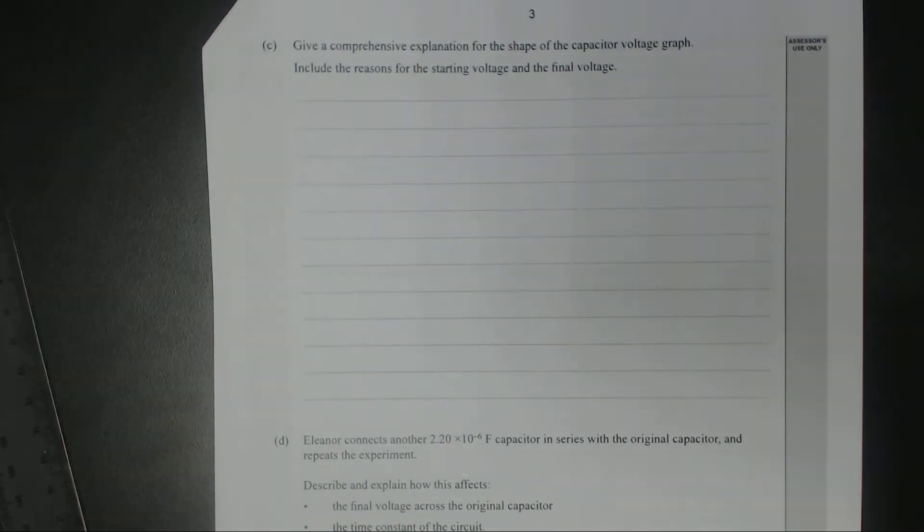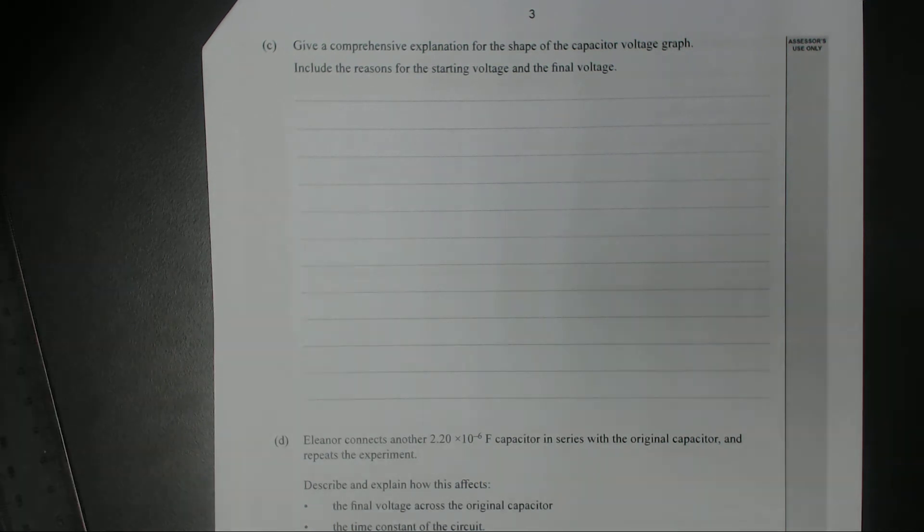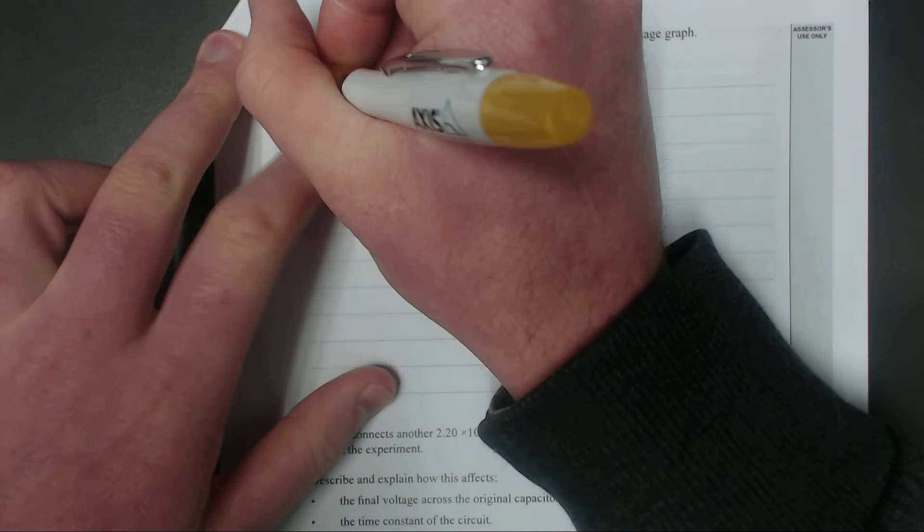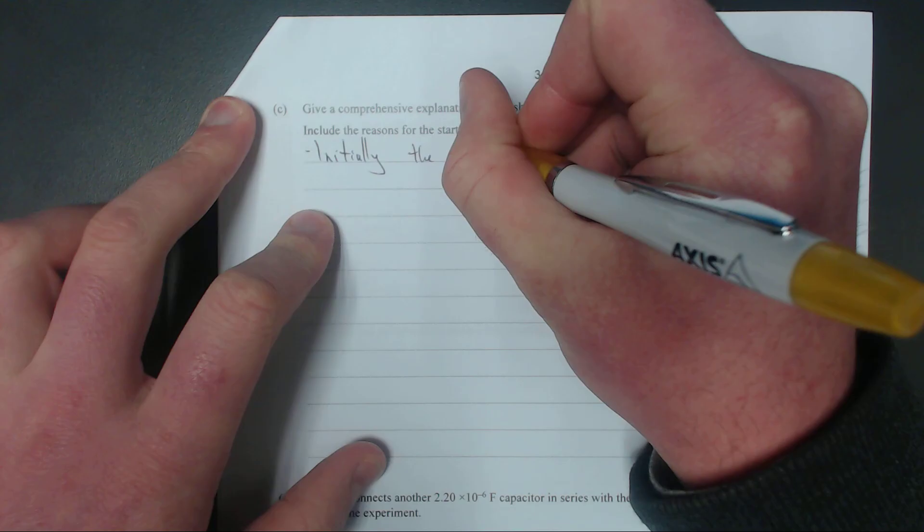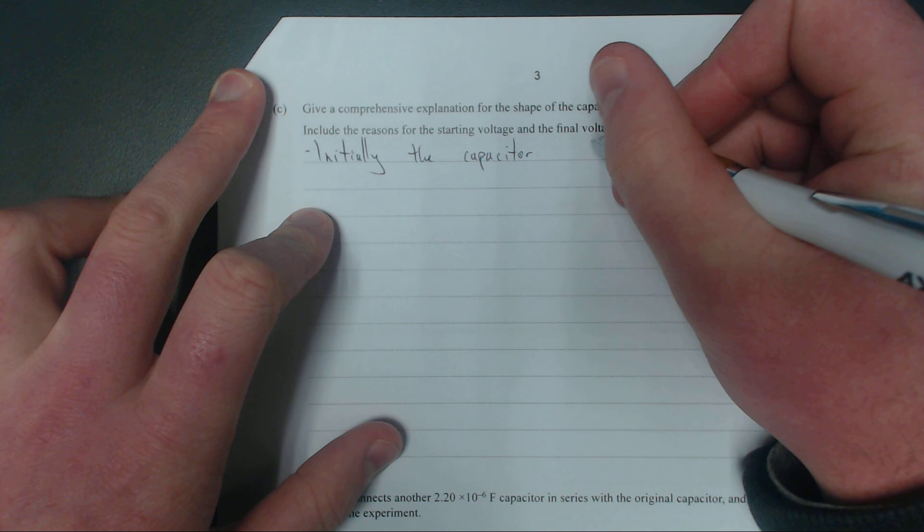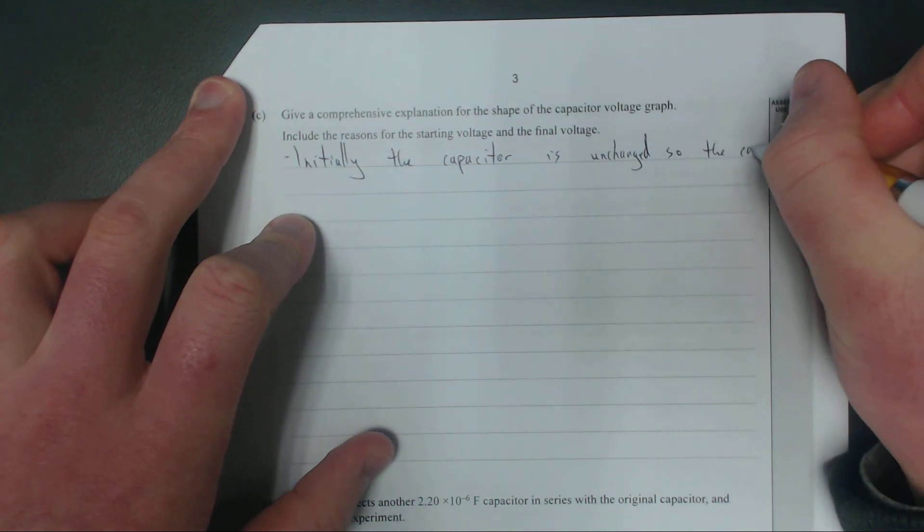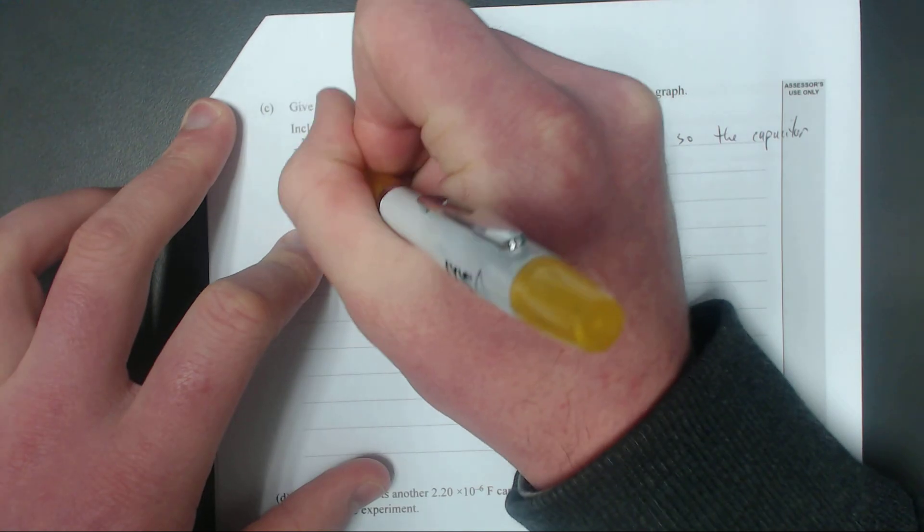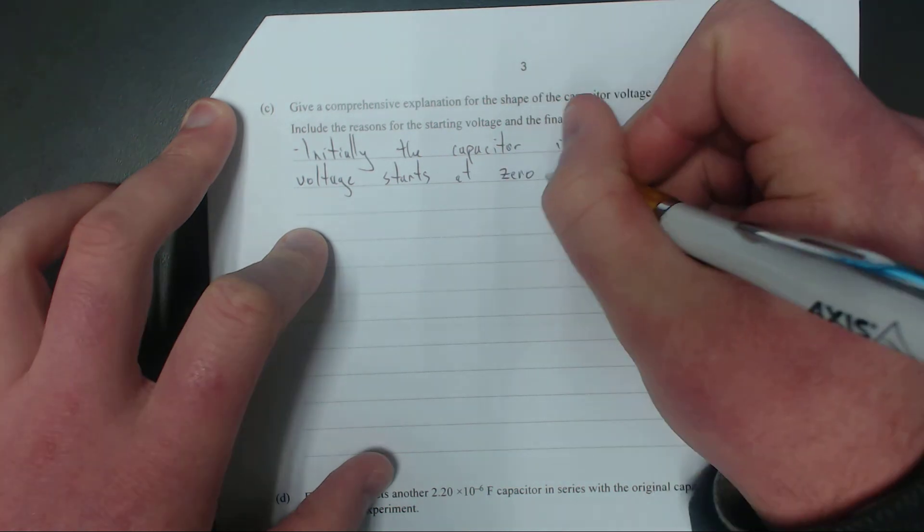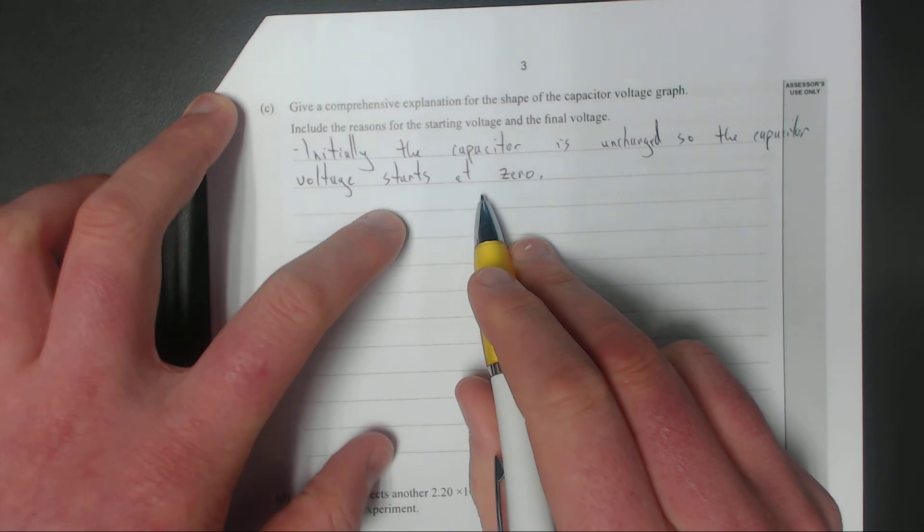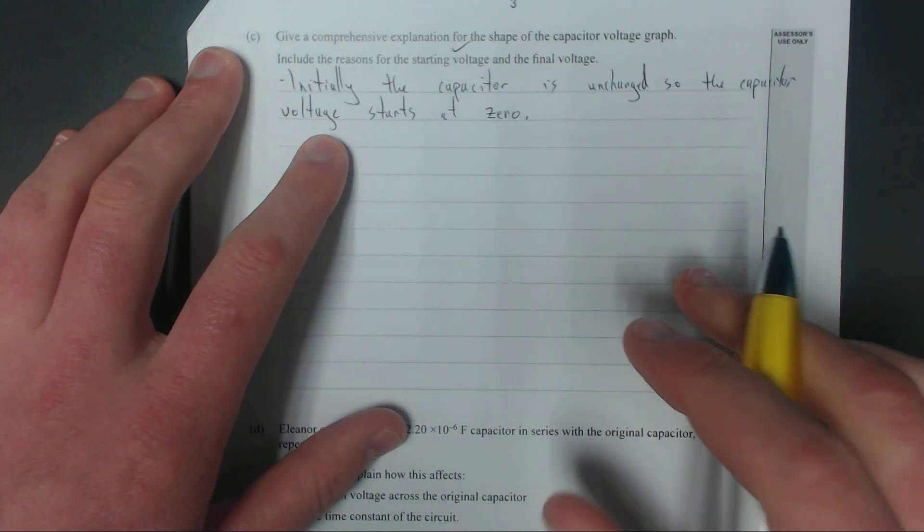Right, next question. Give a comprehensive explanation for the slope of the capacitor voltage graph, include reasons for the starting voltage and the final voltage. So I'll just work through it. Initially, the capacitor's uncharged, so that means there's going to be no voltage across it. So the capacitor voltage starts at zero. That explains the start of the graph, because the voltage starts at zero.